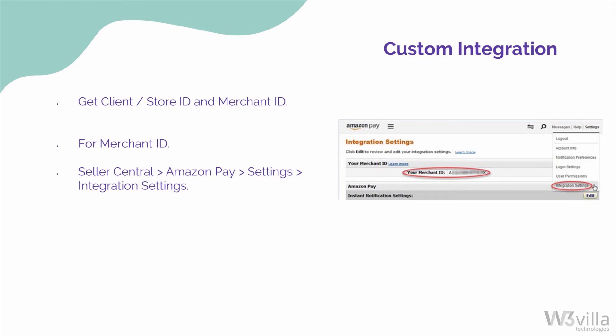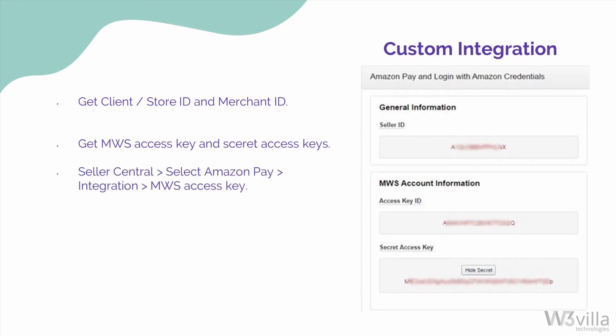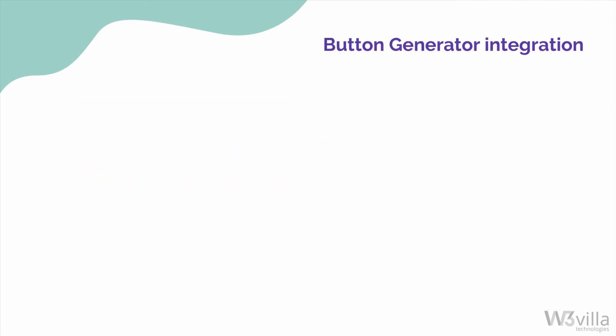Once done, you now need to get the MWS Access Key ID and Secret Access Key, which will be used as a signature for signing your requests. To get these, go back to Seller Central, choose Amazon Pay from the drop-down menu, click Integration, then click MWS Access Key. Note down the keys, which will be used for custom integration of Amazon Pay. These keys are required for integrations that don't use the Button Generator.